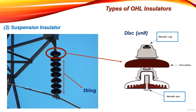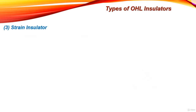A string of any number of units can be built according to the line operating voltage. As the line operating voltage increases, we can use a greater number of units to withstand the voltage of the conductor. This is the key advantage of the suspension insulator. The third type of overhead line insulator is called the strain insulator.